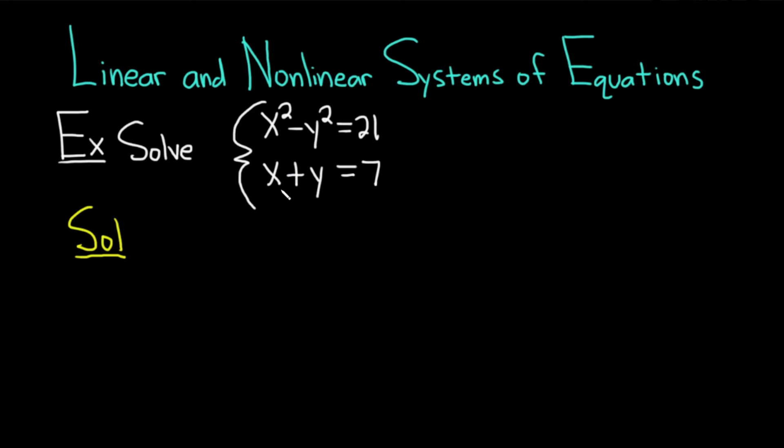Let's take the second equation, x plus y equals 7, and solve it for y. So we have x plus y is 7. Then we can solve this for y by subtracting x from both sides, so minus x minus x. These cancel, and so we have y equals 7 minus x.